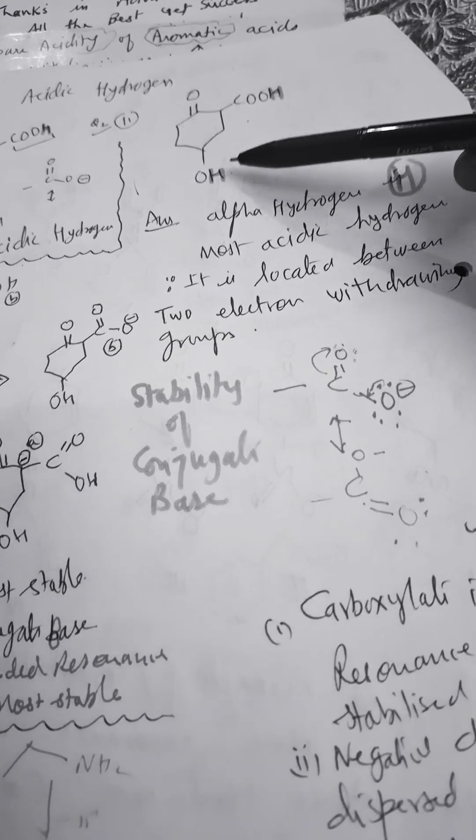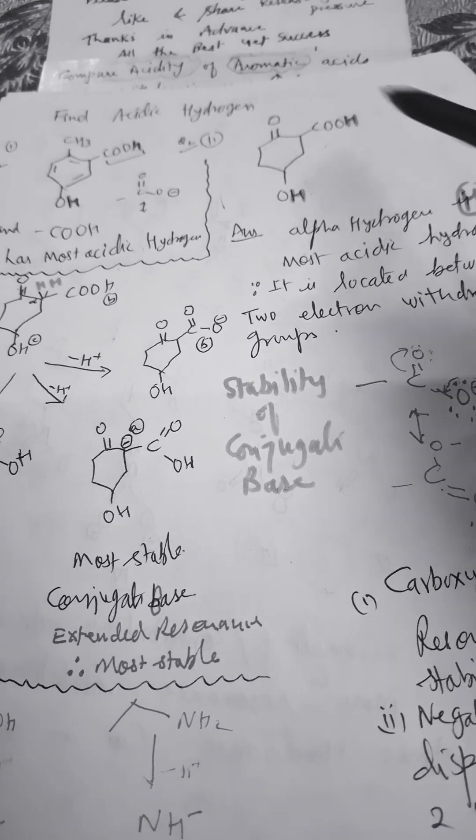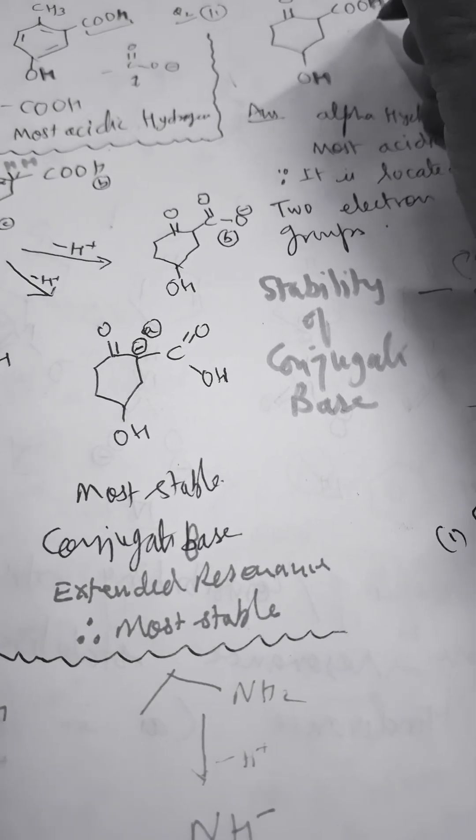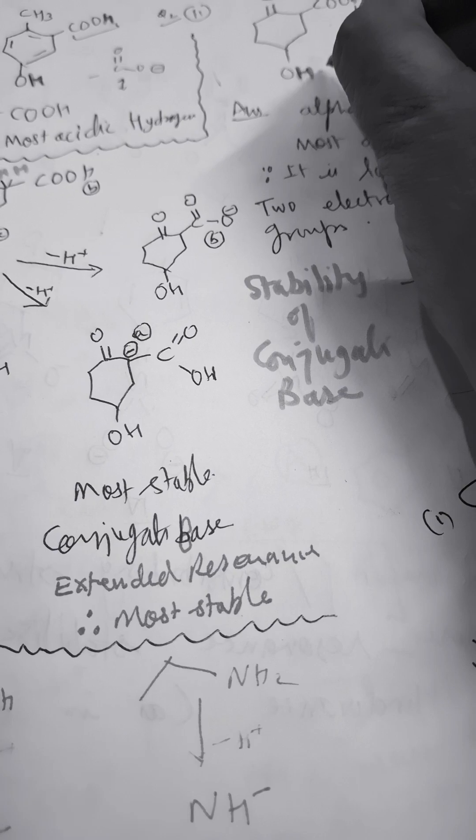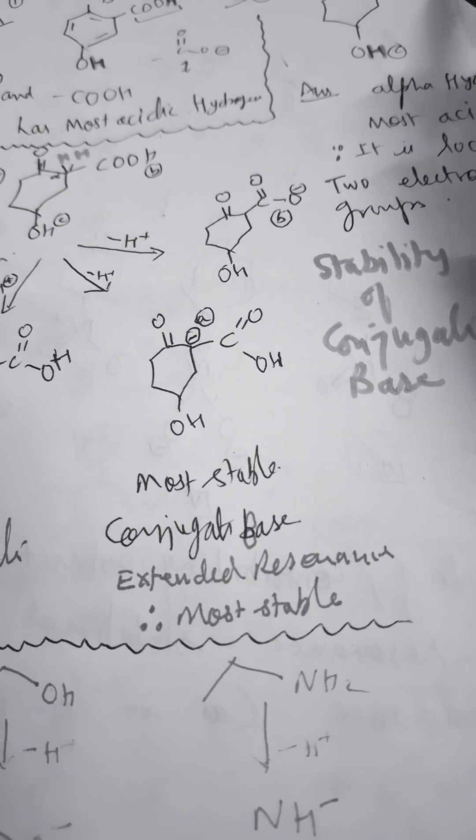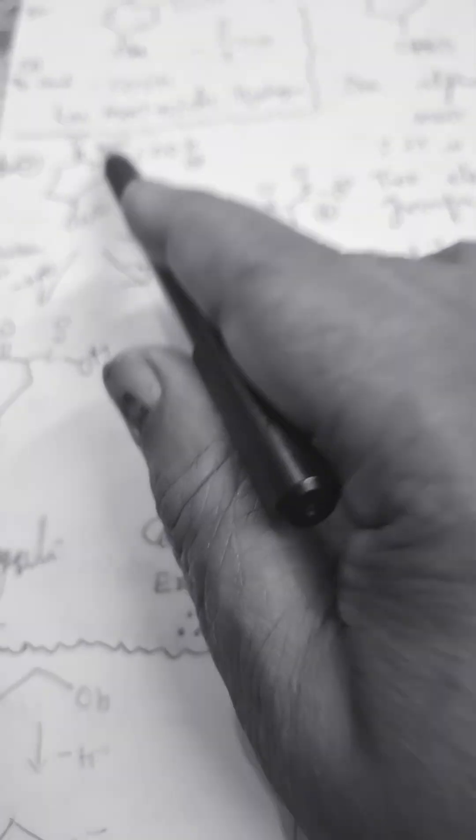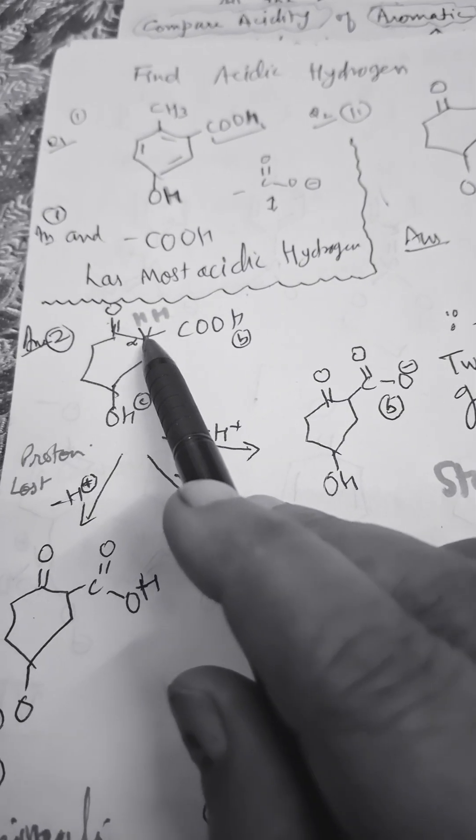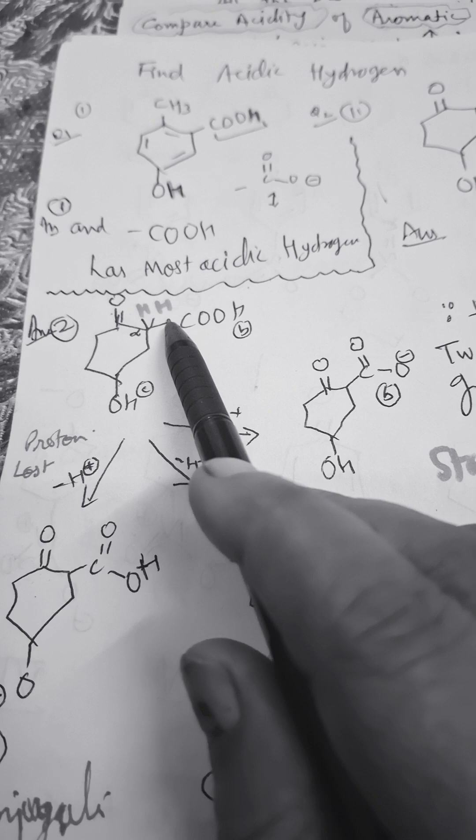Now this compound has COOH group and OH group, and they are asking which is the most acidic hydrogen. Options a, b, and c are given. This is b and this is c. So which is most acidic? This hydrogen I've marked in orange is the alpha hydrogen.